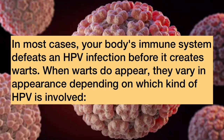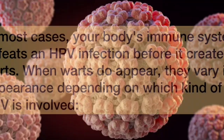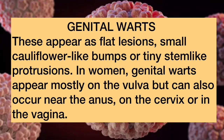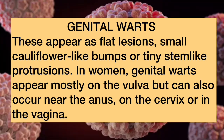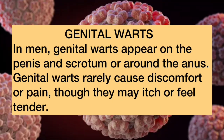When warts do appear, they vary in appearance depending on which kind of HPV is involved. Genital warts appear as flat lesions, small cauliflower-like bumps, or tiny stem-like protrusions. In women, genital warts appear mostly on the vulva, but can also occur near the anus, on the cervix, or in the vagina. In men, genital warts appear on the penis and scrotum, or around the anus. Genital warts rarely cause discomfort or pain, though they might itch or feel tender.